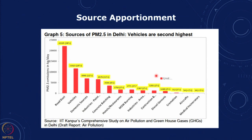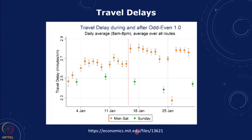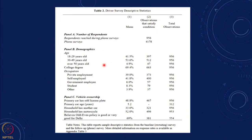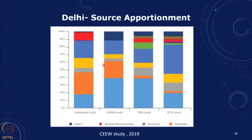Of course, there are different kinds of vehicles and sources — vehicles account for a certain percentage of pollution, as shown in an IIT Kanpur study. A travel delay analysis shows that travel delays were lower during the 15 days of the odd-even scheme than in the 15 days after, indicating a reduction in congestion. Econometric models have also been used; you can look at more details in the referenced paper.